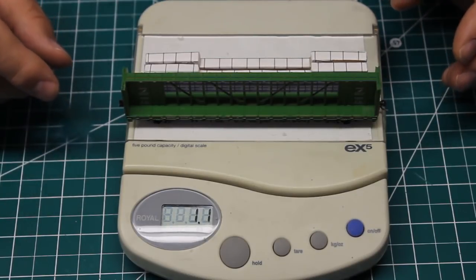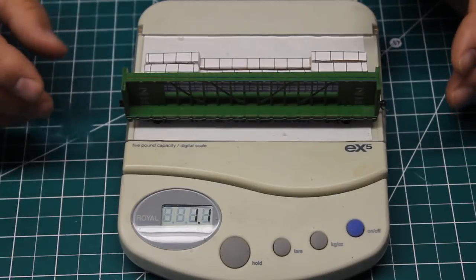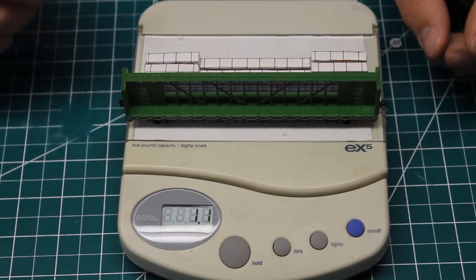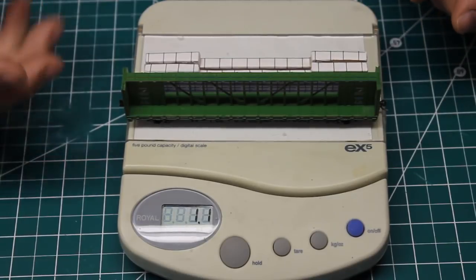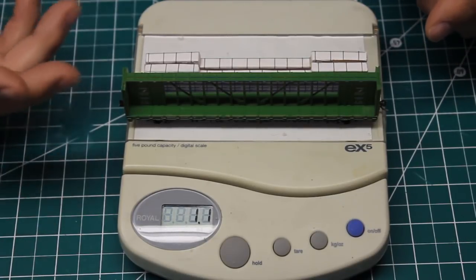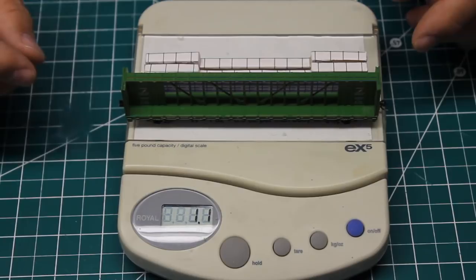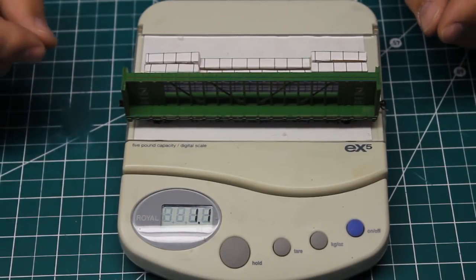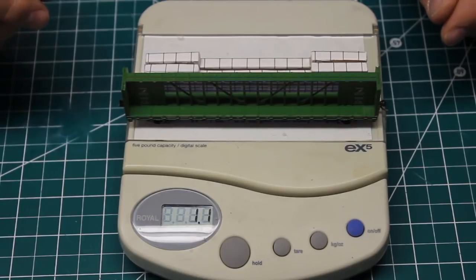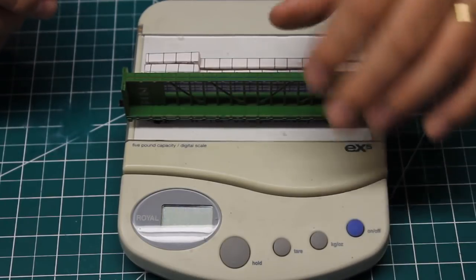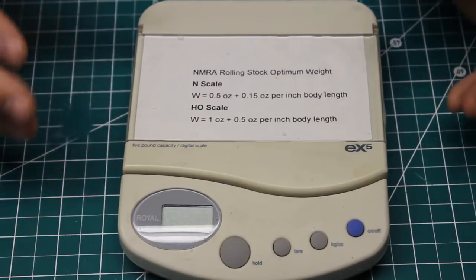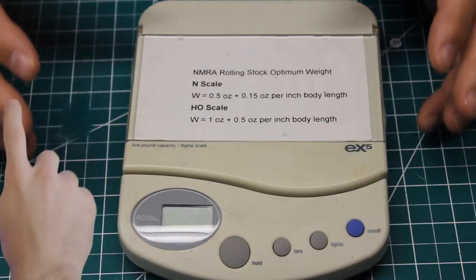So if you have cars that are light some cars are easier to add weight to than others covered hopper sometimes the lids will lift off you can put weight on the inside box cars a lot of times the bottom frames will come out and you can add weight. Things like open hoppers or gondolas again loads are a good way to add weight to those but it's really helpful and really helps to optimize how your trains run if you get them to the right weight.